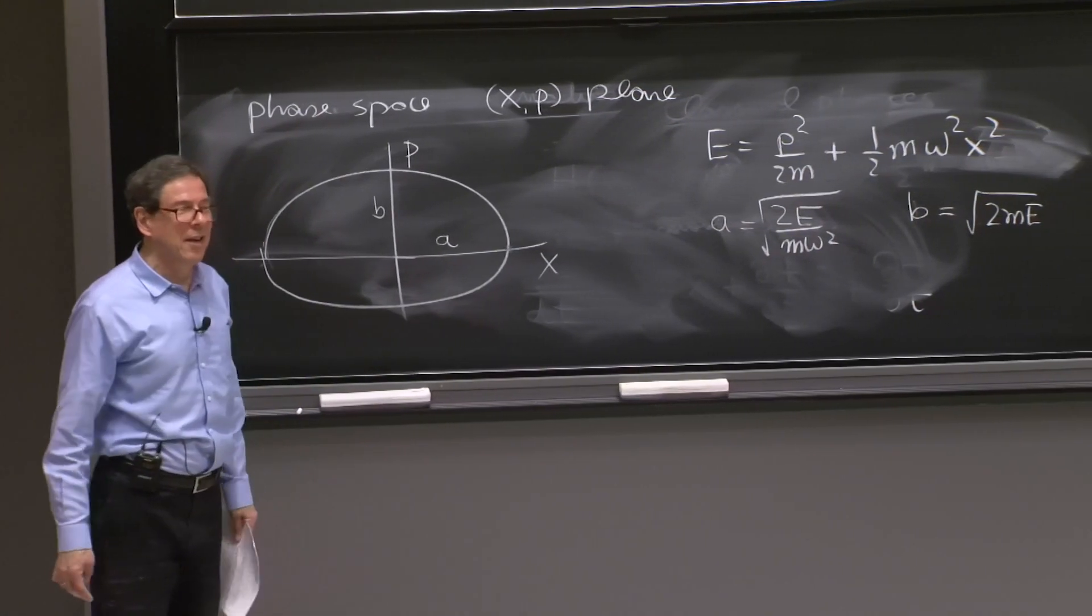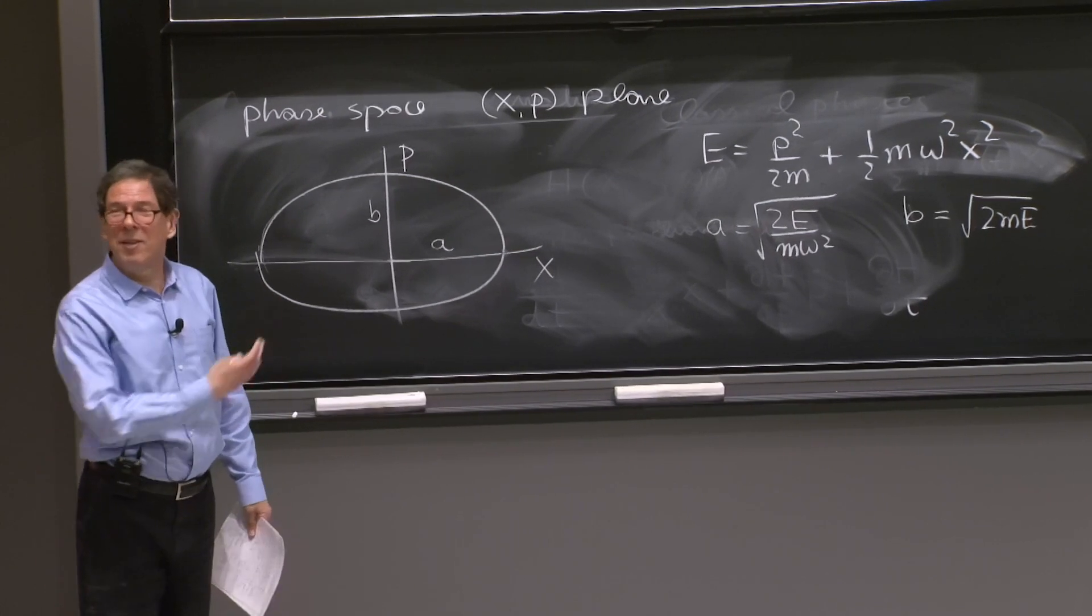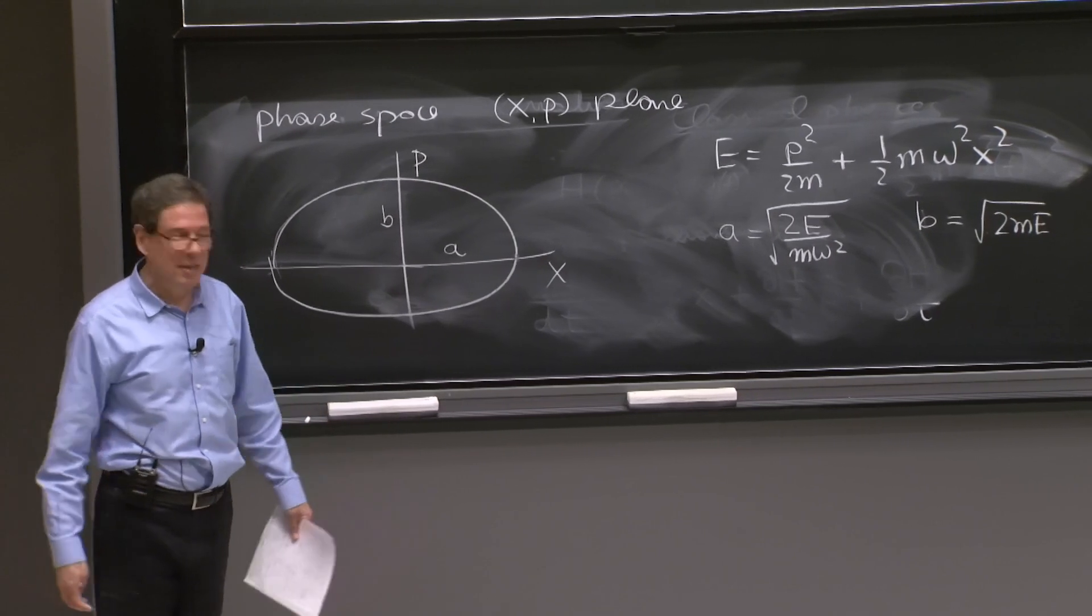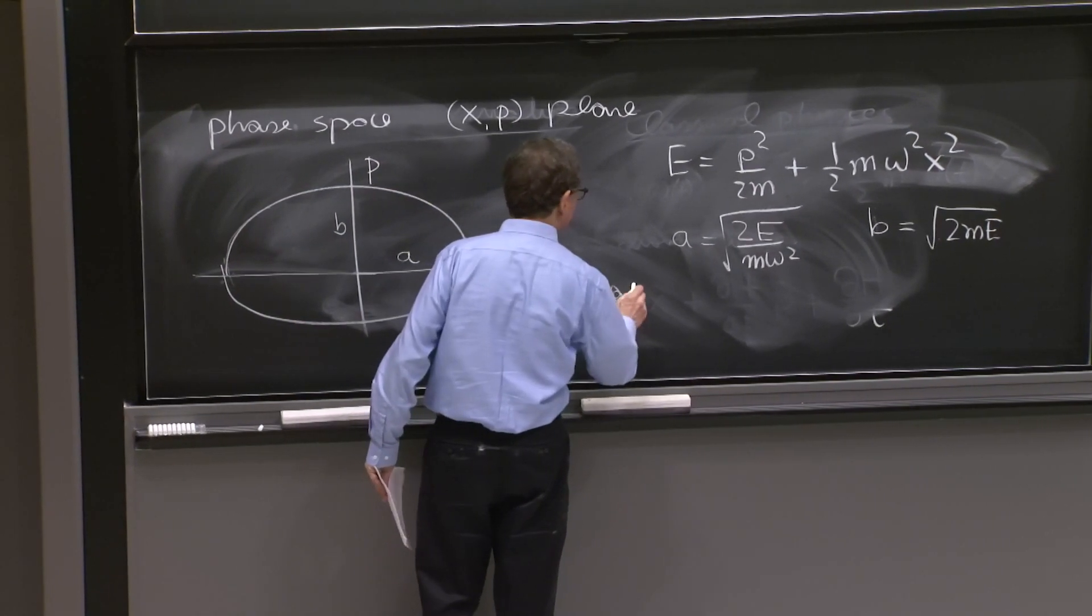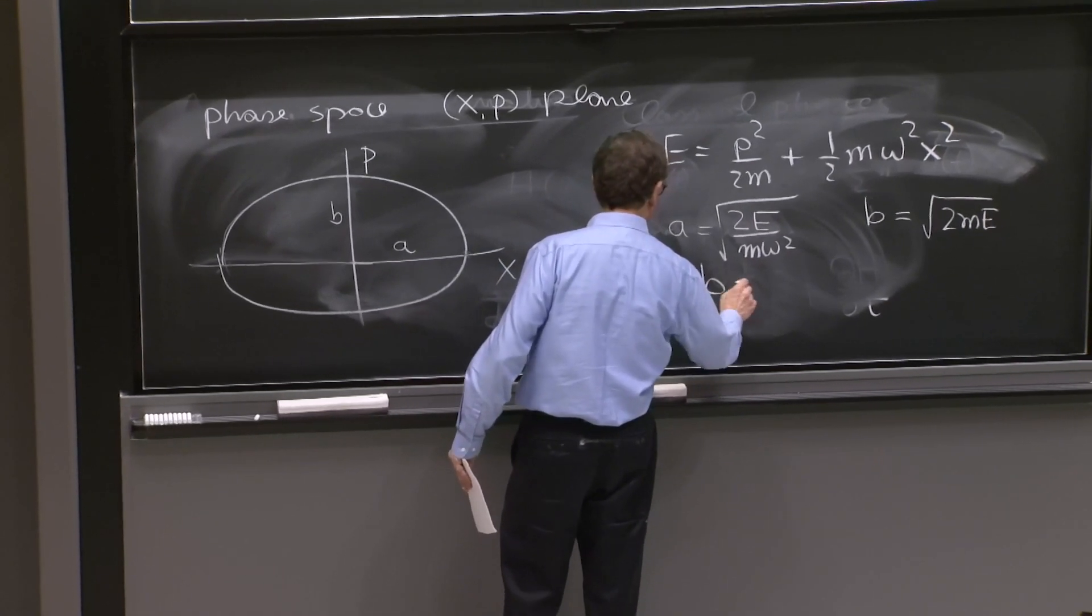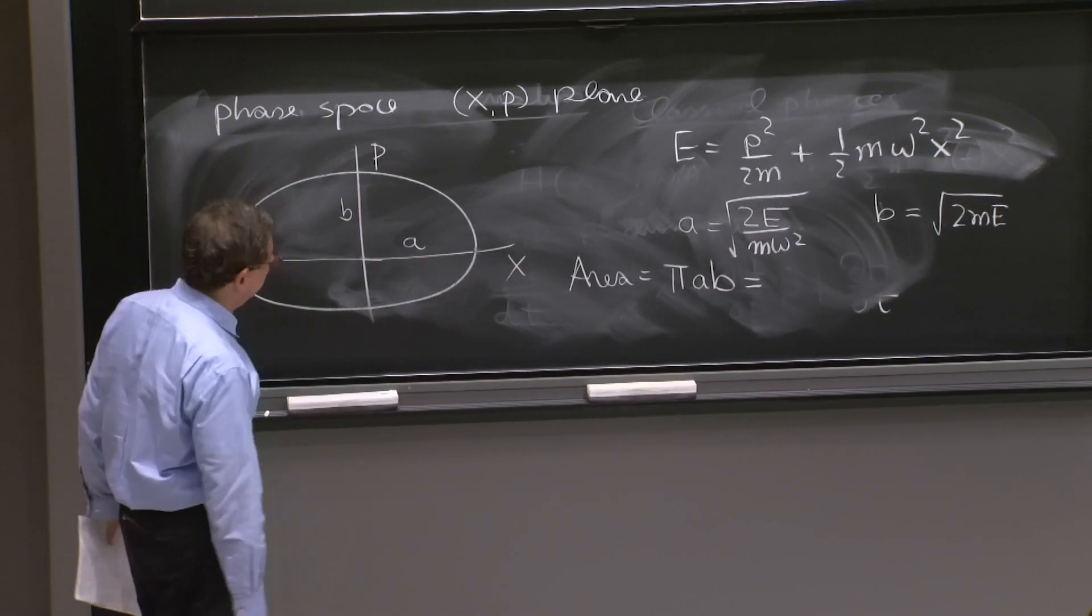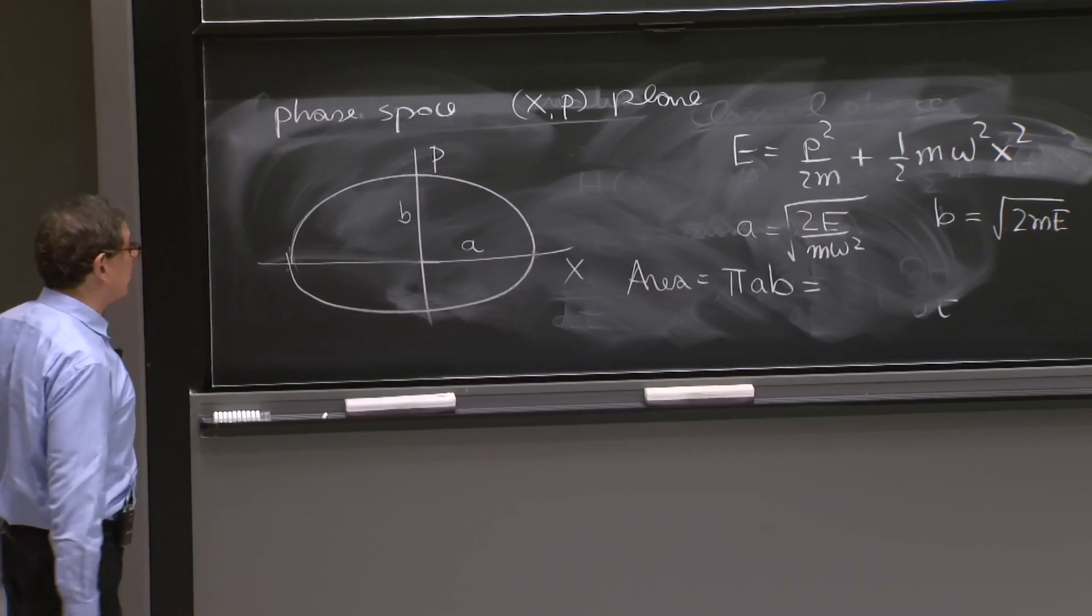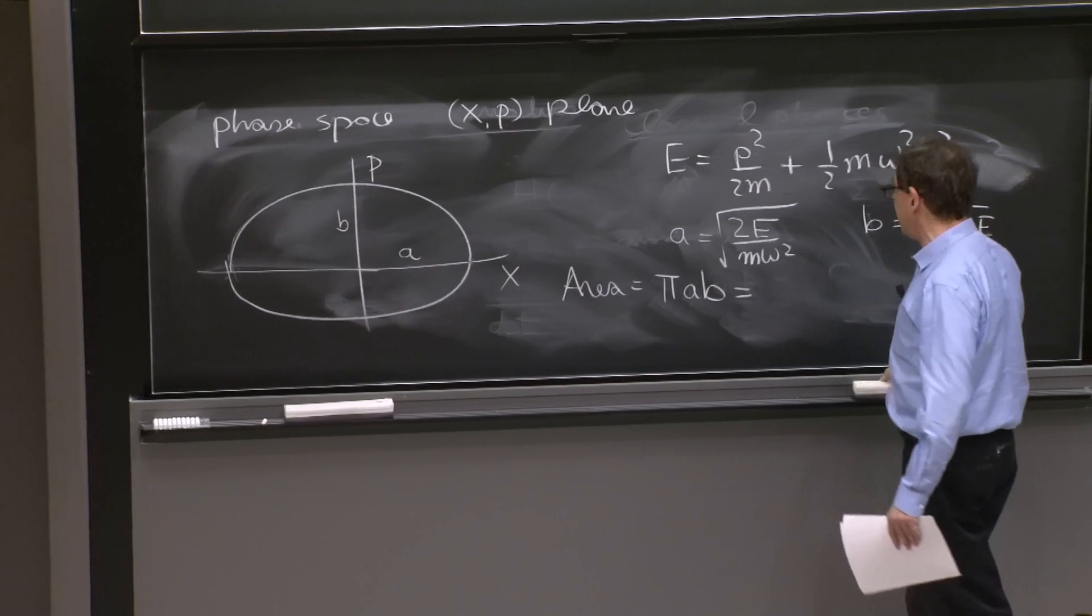So you could ask, when you have something like that, you would ask, okay, you have an ellipse. What's the area of the ellipse? This area is pi AB. That's the formula for the area of an ellipse. Pi times the product of the semi-major and semi-minor axis that clearly generalizes correctly to a circle. And it's the right formula.